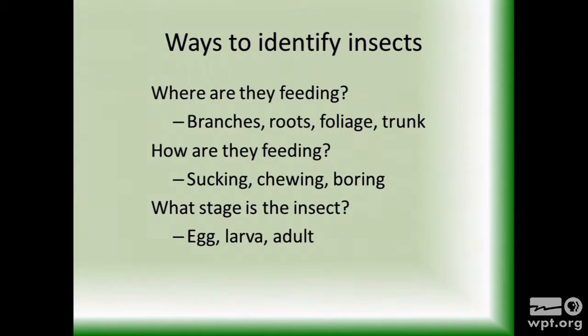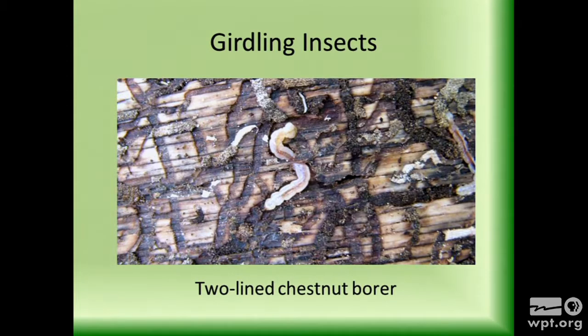For insects, there are all kinds of different ways we categorize them — how they feed, what they're feeding on, what stage they're in. Let's start with those insects that eat the tissue right underneath the bark. We call those girdling insects because as they chew on that growing tissue under the bark, they kill the tree by cutting off the tissue that transports water up from the roots and nutrients down to the roots — basically creating a ring around the tree that chokes off that flow. The two-line chestnut borer is one of those kinds of insects.